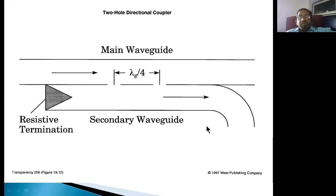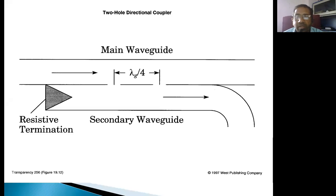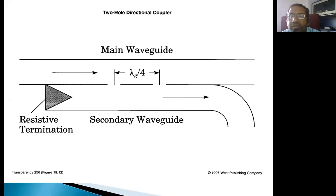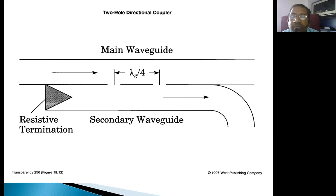Welcome back to the online sessions on MWT. In the previous sessions we covered the S-matrix for the E-plane T, H-plane T, magic T, directional coupler, and we discussed the theory behind circulators and isolators. We also discussed applications of magic T and the circulator. A circulator can normally be used as an isolator — if you make all ports go to zero except the immediate port, it simply works like an isolator.